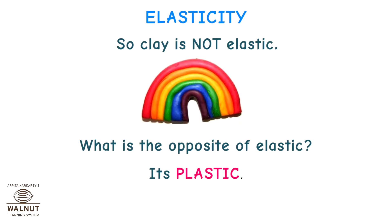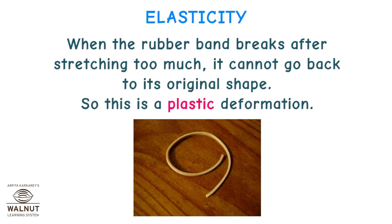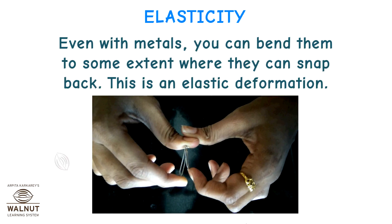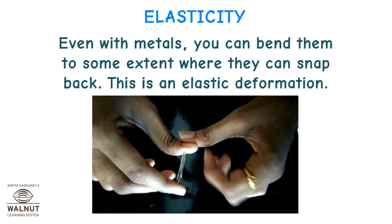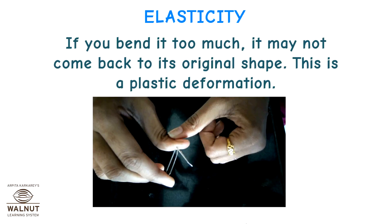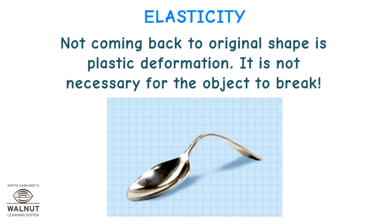What is the opposite of elastic? It's plastic. Change of shape means change of form — when the form changes, we call it deformation. Depending on whether the object can go back to its original shape or not, the deformation can be plastic or elastic. When the rubber band breaks after stretching too much, it cannot go back to its original shape — so this is a plastic deformation. With metals, you can bend them to some extent where they can snap back — this is an elastic deformation. If you bend them too much, they may not come back to their original shape — this is a plastic deformation.